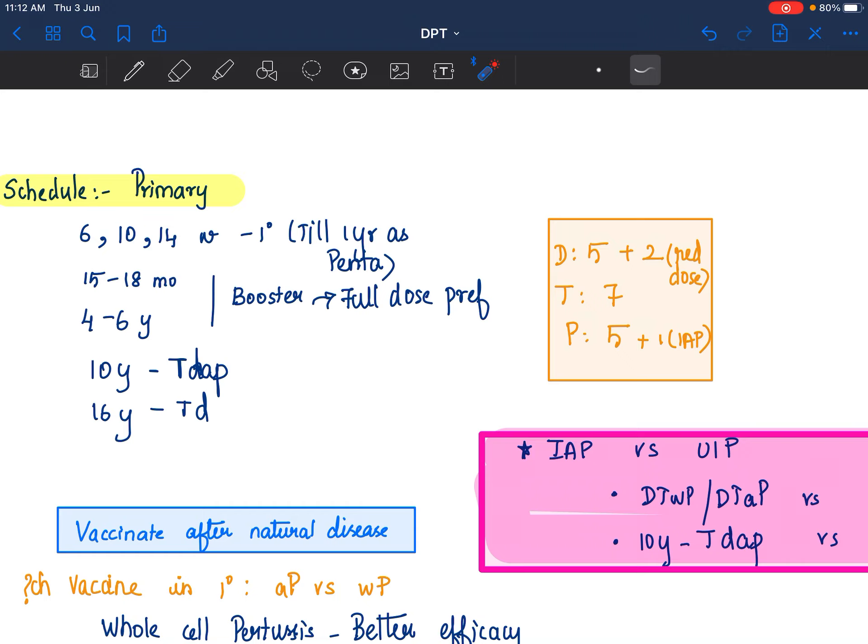The general primary schedule is 6, 10 and 14 weeks till 1 year of age. 15 to 18 months first booster and 4 to 6 years second booster. Then 10 years and 16 years, you will give Tdap and TD.